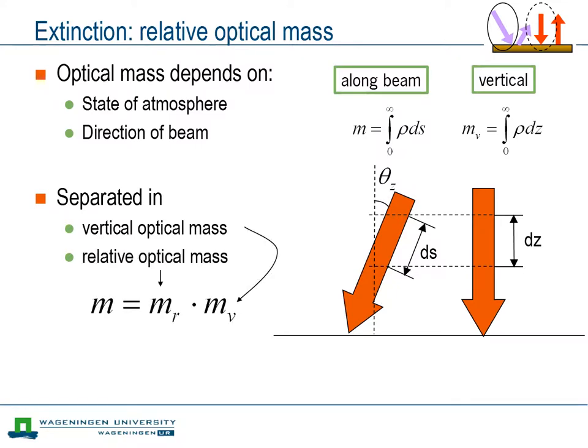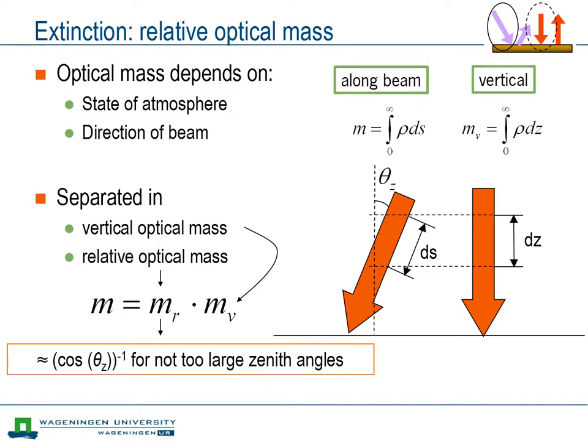The direction of the beam is introduced through the relative optical mass. It indicates how much more mass is encountered by the radiation when it enters the atmosphere under an angle. If the sun is not too close to the horizon, that is, for not too large solar zenith angles, the relative optical mass can simply be related to the solar zenith angle.